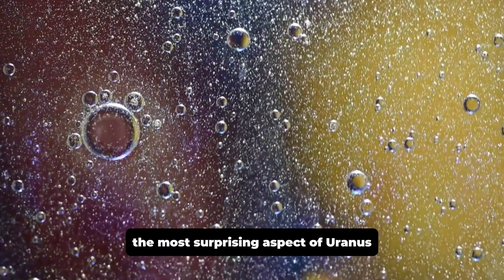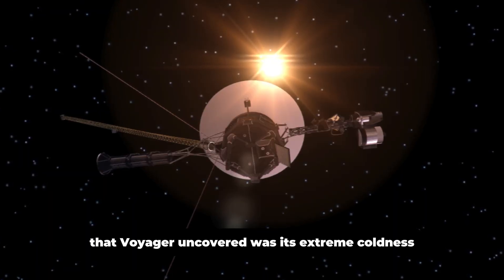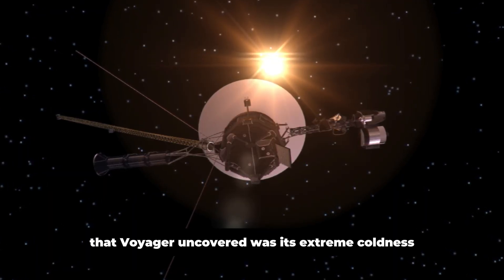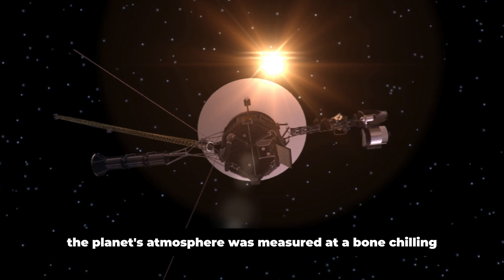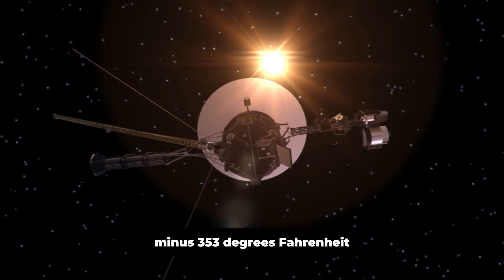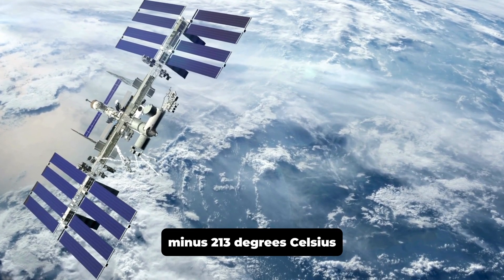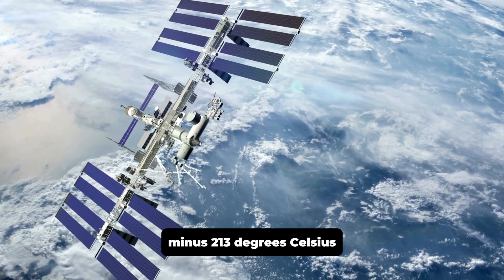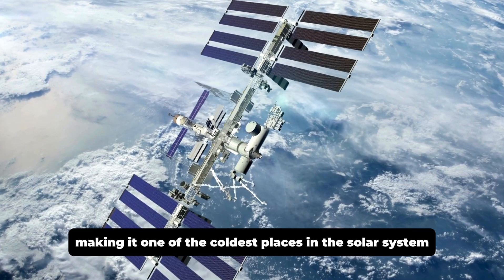Perhaps the most surprising aspect of Uranus that Voyager uncovered was its extreme coldness. The planet's atmosphere was measured at a bone-chilling minus 353 degrees Fahrenheit, minus 213 degrees Celsius, making it one of the coldest places in the solar system.